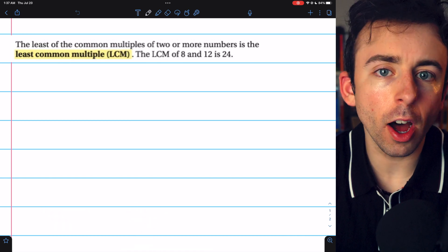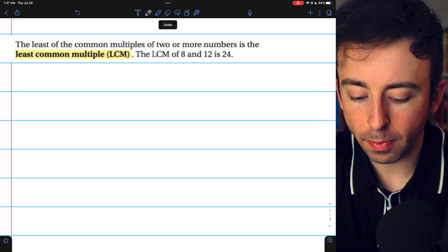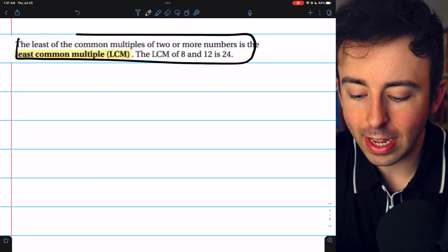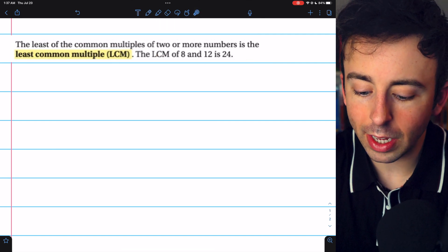The smallest common multiple of two numbers is called the least common multiple, and you can see that definition here. For example, the least common multiple of 8 and 12 is 24.